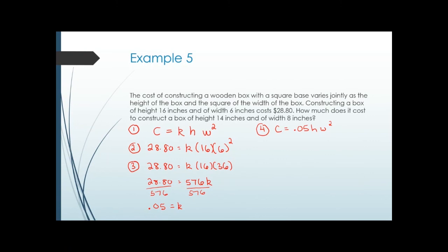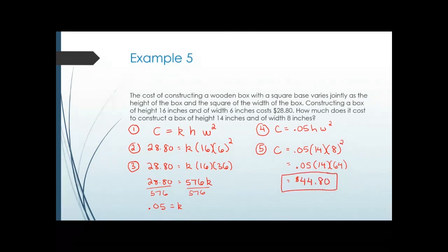Step five: find the cost to construct a box of height 14 and width 8. Plug in H equals 14 and W equals 8: C equals 0.05 times 14 times 8 squared. Square the 8 first to get 64, then multiply: 0.05 times 14 times 64 equals $44.80. The price increased overall even though height slightly decreased, because the width increase had a squared effect.